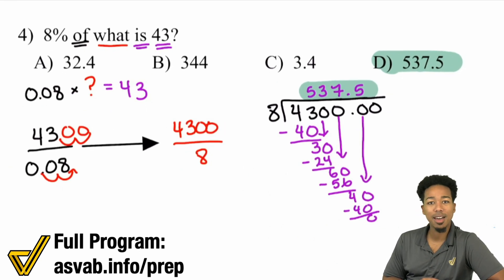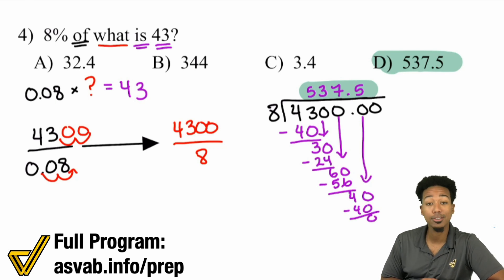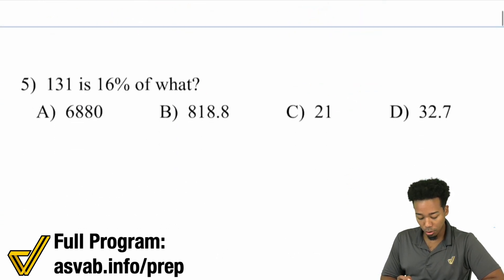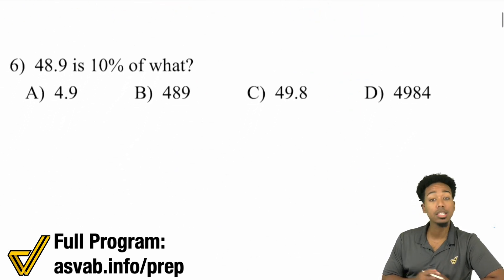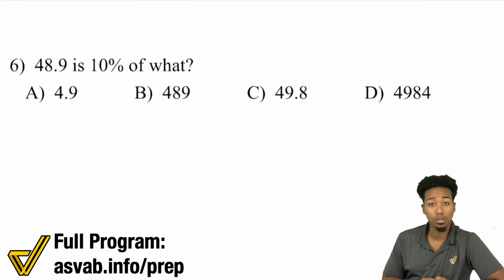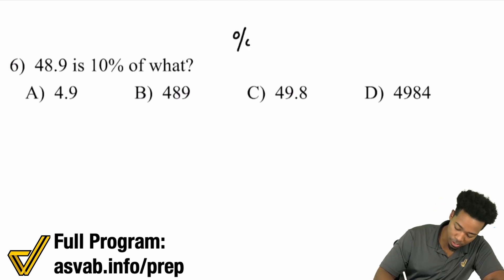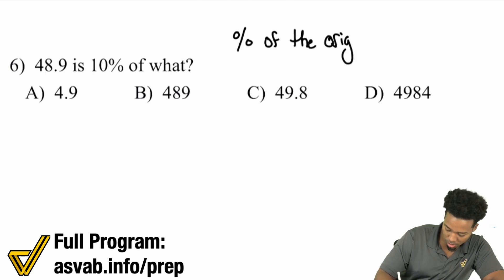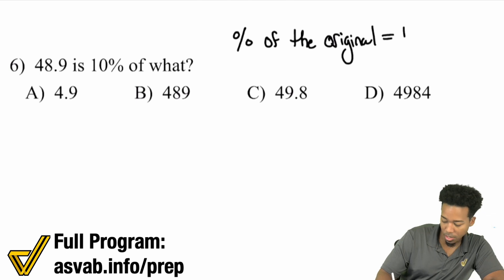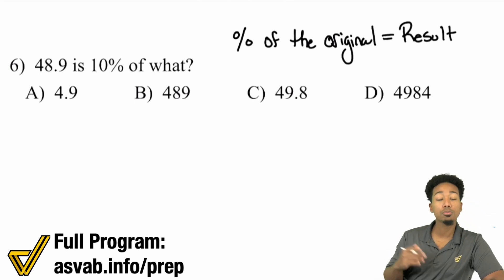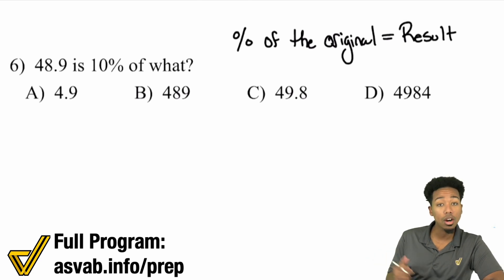My math party people, to get back to that original number, you divide. To get the result, you multiply. That's seriously it. You just have to understand: am I dealing with the original, or am I dealing with the result? By turning that English into math, you can clearly see what's going on. Because at the end of the day, the percent of the original equals the result. As long as you're playing off that main idea, you're good to go.